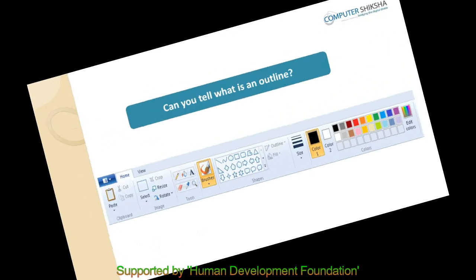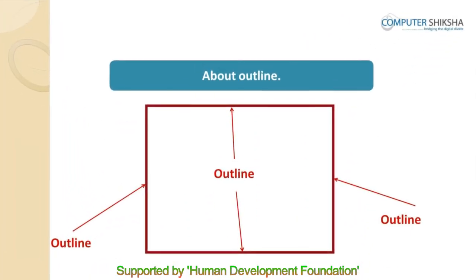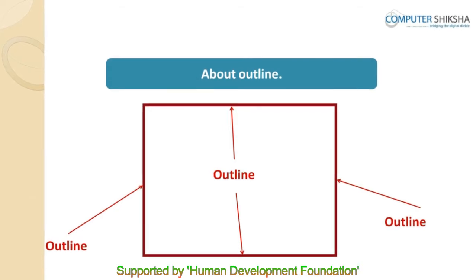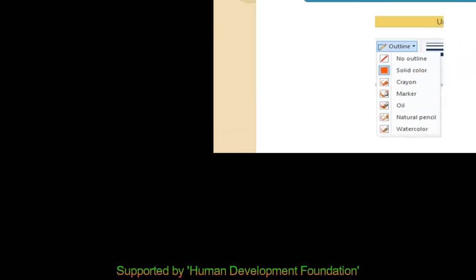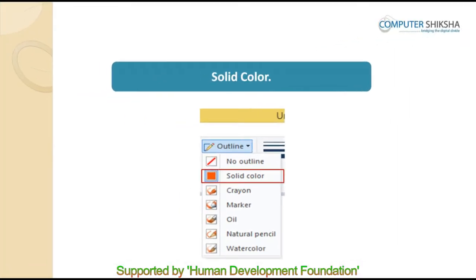An outline is the line of any drawing which can be seen outside of any image. We can do many things with it, such as no outline, solid color, crayon, and much more.